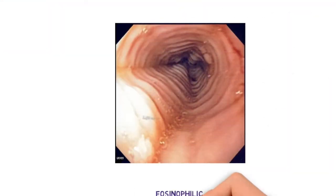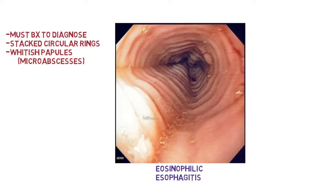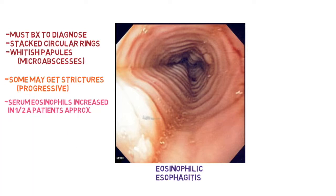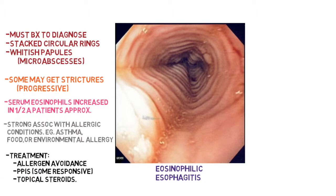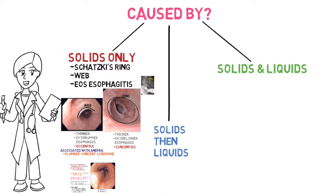Eosinophilic esophagitis has a scalloped appearance. We must do a biopsy to diagnose it. It has a stacked circular ring appearance; whitish papules or microabscesses may be seen. Some may develop strictures, leading to more progressive dysphagia. Serum eosinophils are increased in approximately half of patients. There is a strong association with allergic conditions such as asthma, food, or environmental allergies. Treatment: allergen avoidance, PPIs — some may respond — and topical steroids.